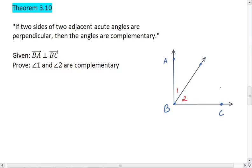The theorem says if those sides are perpendicular, then the angles are complementary. So we're given BA perpendicular to BC, and we want to prove that 1 and 2 are complementary.